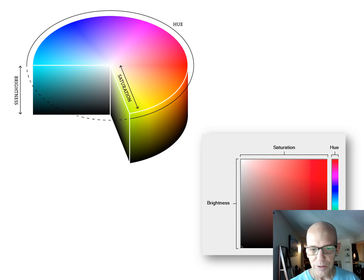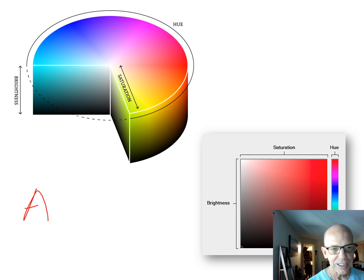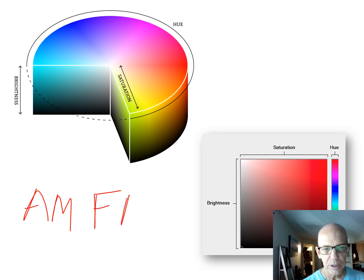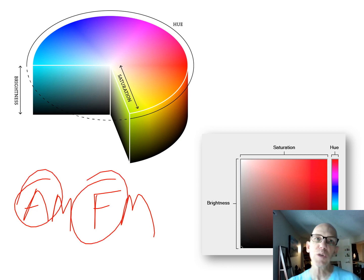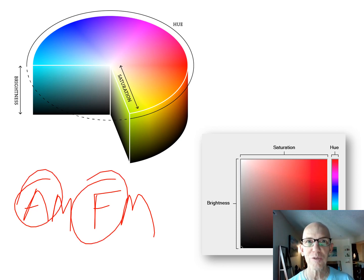Think about old-school radios: AM stands for amplitude modulation, and FM stands for frequency modulation — those are the two characteristics of a wave.